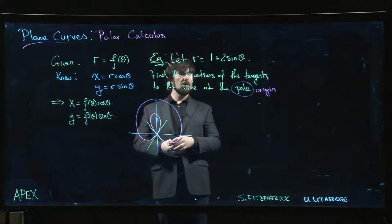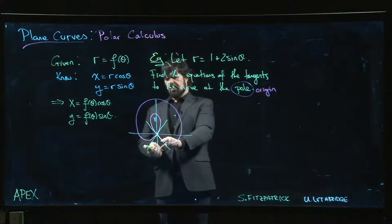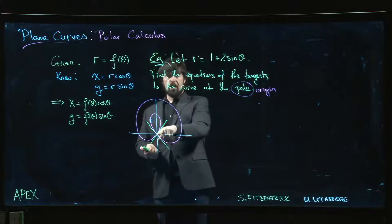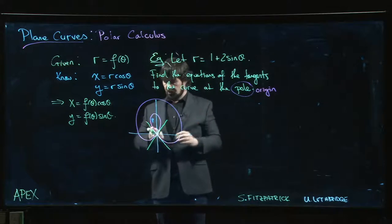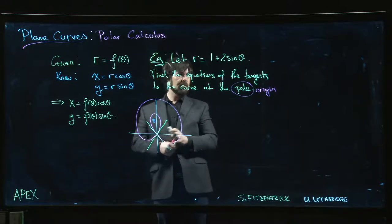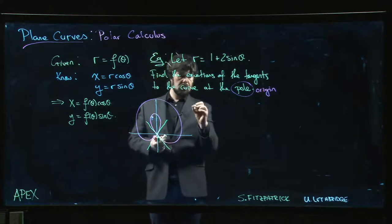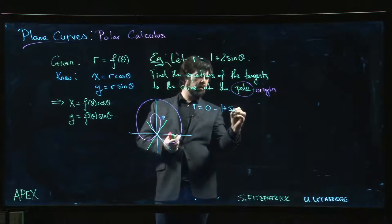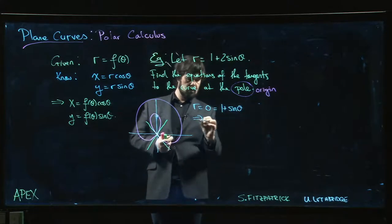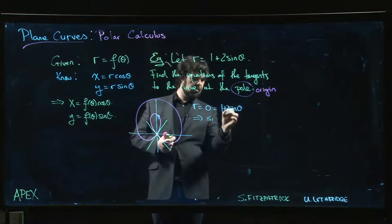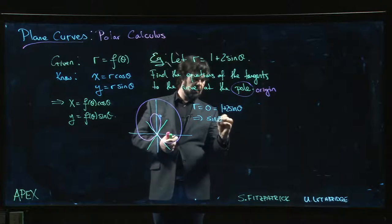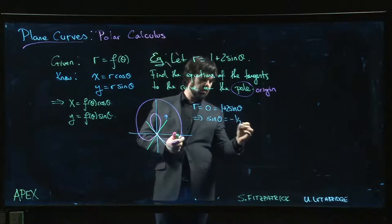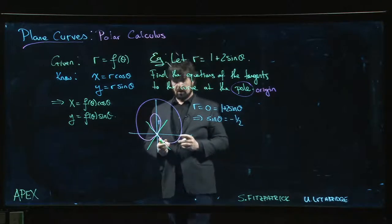So in order to figure this out, we've got to figure out what value of theta corresponds to r equals zero. r equals zero is the origin. So we set r equal to zero. So that means zero is one plus two sine theta. Well, that means that sine theta should be minus one half.